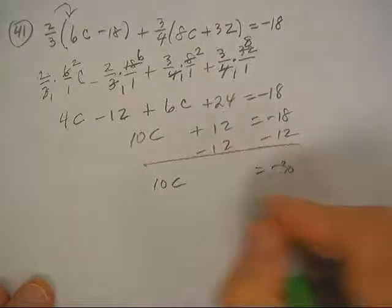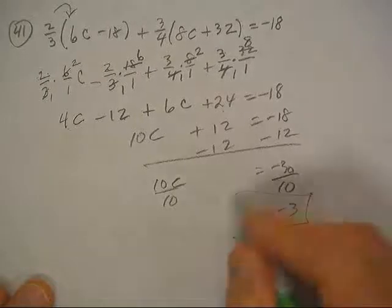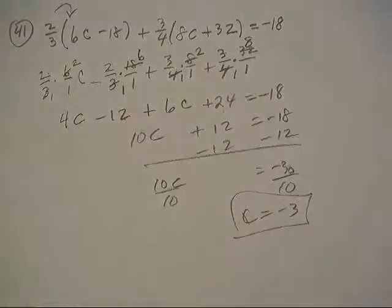10C is negative 30. Divide by 10. C is negative 3. Bingo. And there we go.